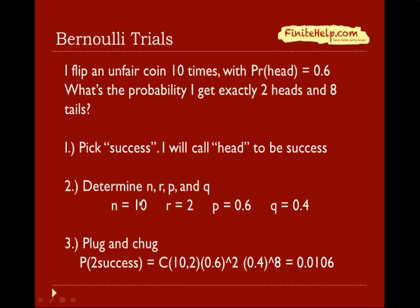I choose heads as success, so n is 10 and r is 2, because I want exactly 2 successes. p is 0.6 because the probability of success (heads) is 0.6, and q is 1 minus p, which is 0.4. Plugging in: the probability of 2 successes is 10 choose 2, times 0.6 to the 2nd, times 0.4 to the 8th, which comes out to be 0.0106.